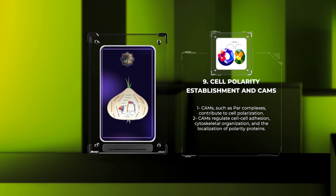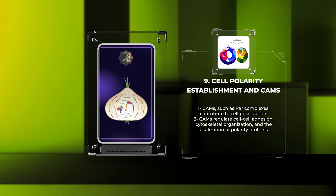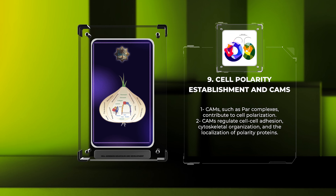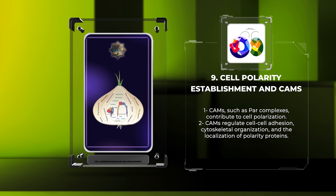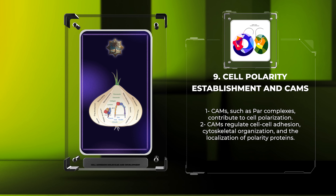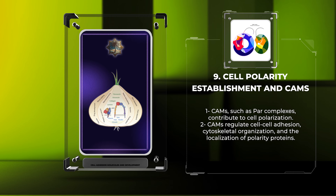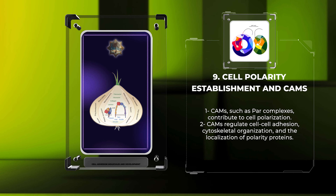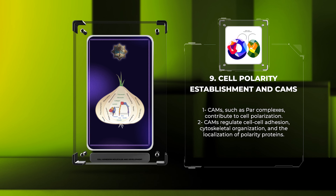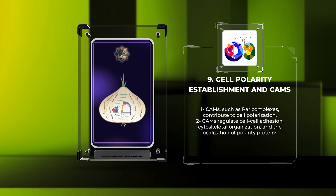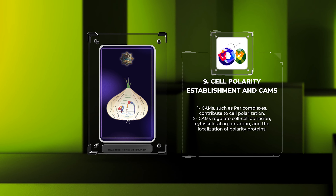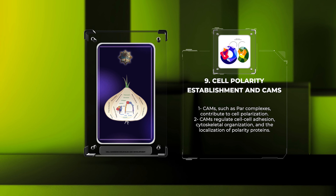The establishment of cell polarity is critical for proper tissue development and function. CAMs such as PAR complexes contribute to cell polarization by regulating cell-cell adhesion, cytoskeletal organization, and the localization of key polarity proteins. These adhesion molecules cooperate with other polarity regulators, ultimately ensuring the correct positioning and orientation of cells within tissues.